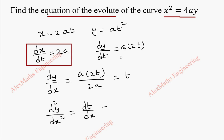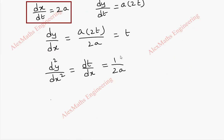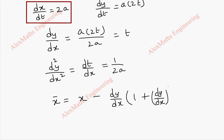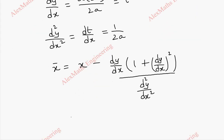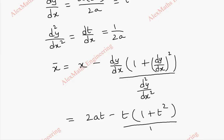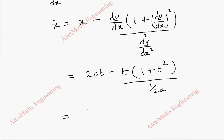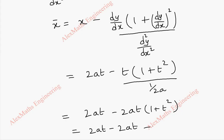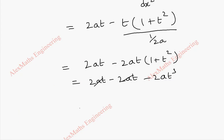So we can say dt/dx is 1 by 2a. Now coming to the x-bar formula for the center of curvature: x-bar is x minus (dy/dx) into (1 plus (dy/dx)²) all divided by d²y/dx². Substituting, this becomes 2at minus t into (1 plus t²) divided by 1/2a. Multiplying 2a into the numerator gives 2at minus 2at minus 2at³. After cancelling, x-bar equals minus 2at³.